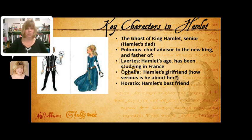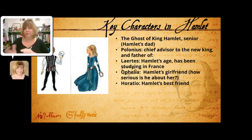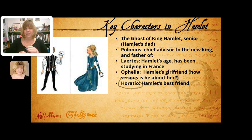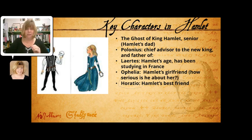Then we meet Ophelia — Polonius's daughter, so she and Laertes are brother and sister. She is Hamlet's on-again, off-again girlfriend. It's pretty clear they had a thing going, but Hamlet's been away and now he's back, and a big question in the play is exactly how serious Hamlet actually is about Ophelia. We also have Horatio — Hamlet's best friend, his wingman and confidant. Hamlet tells Horatio his ideas, feelings, and thoughts, where he doesn't confide in any other characters.